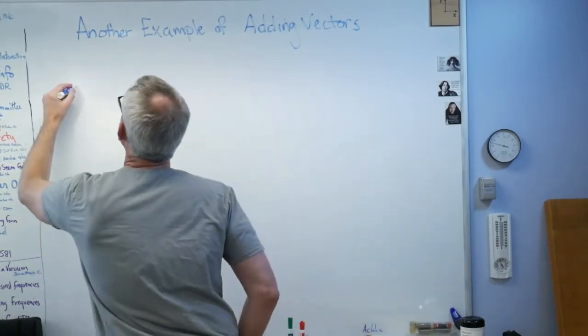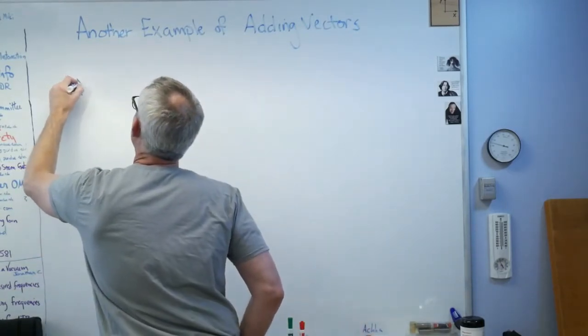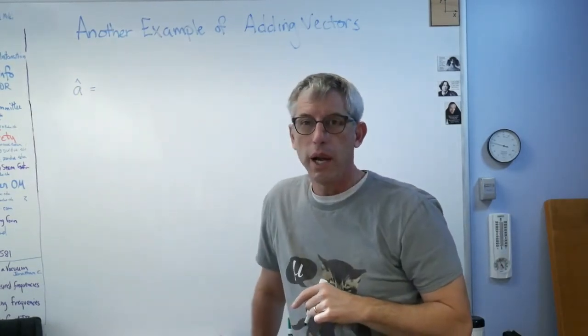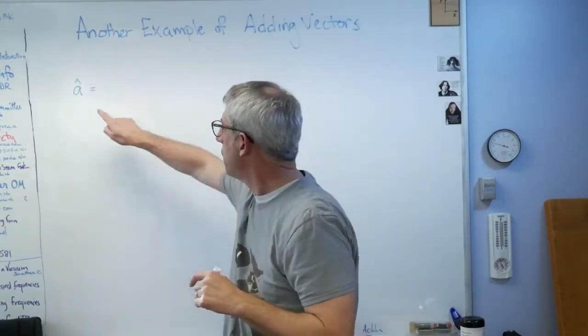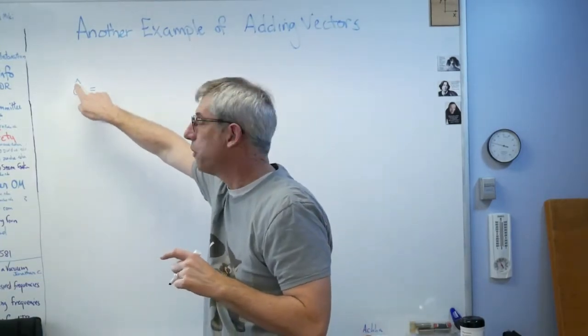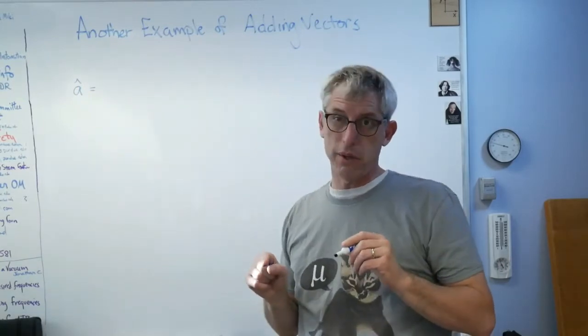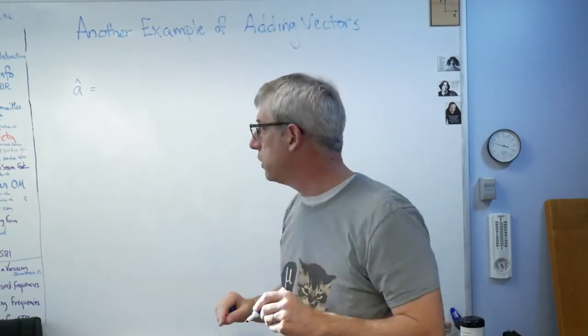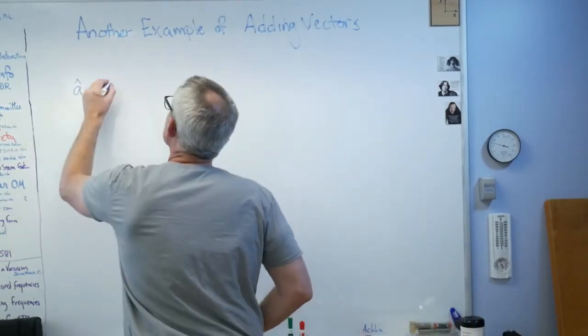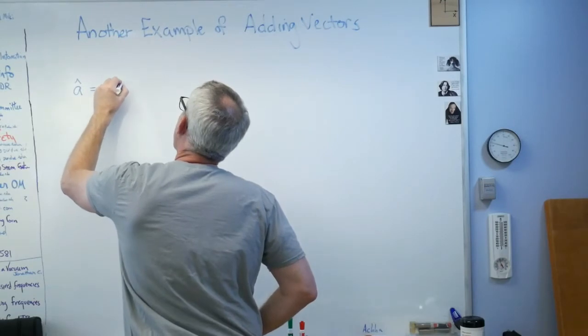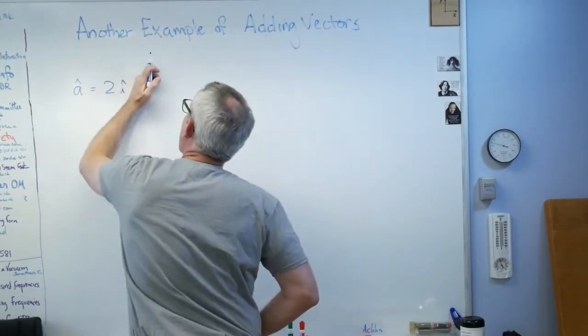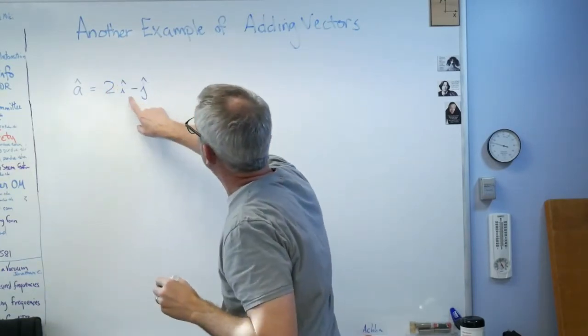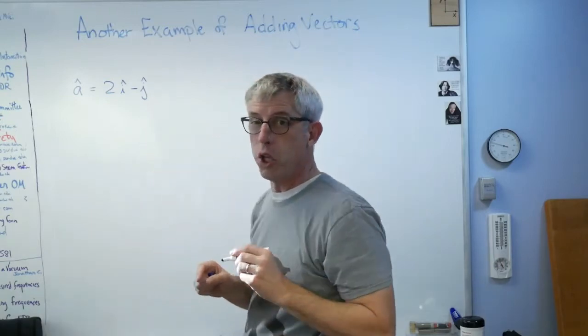Let's do a vector problem. I'm going to have a vector â. Remember that little caret is mathematical notation meaning that's a vector, not just a number. It has magnitude and direction. So I'm going to call this 2î minus ĵ.